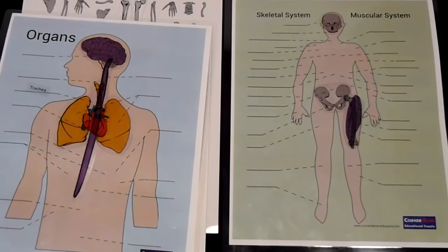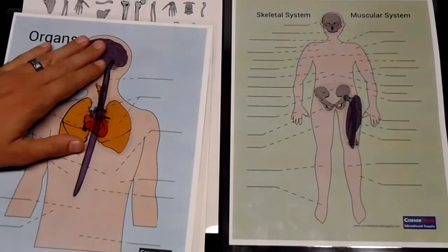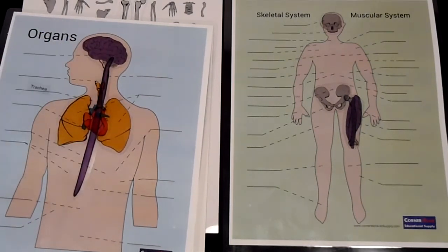So anyway, this is Dr. Marcus Ross with Cornerstone Educational Supply. This is our anatomy sticker package. Check it out. It's in our Cycle 3 page for Classical Conversations. Have a great day. Lord bless you.